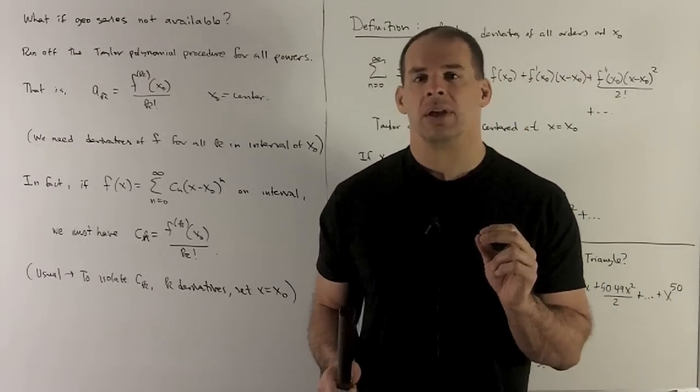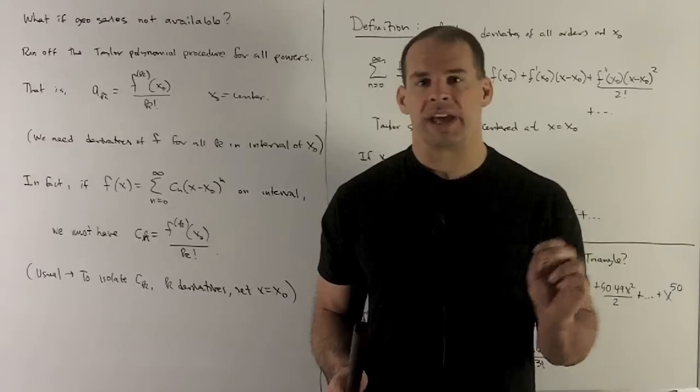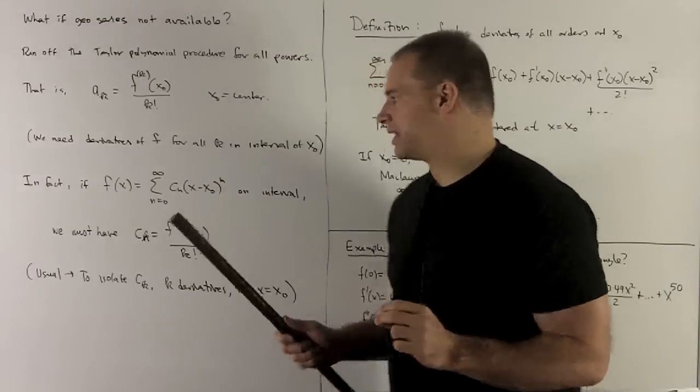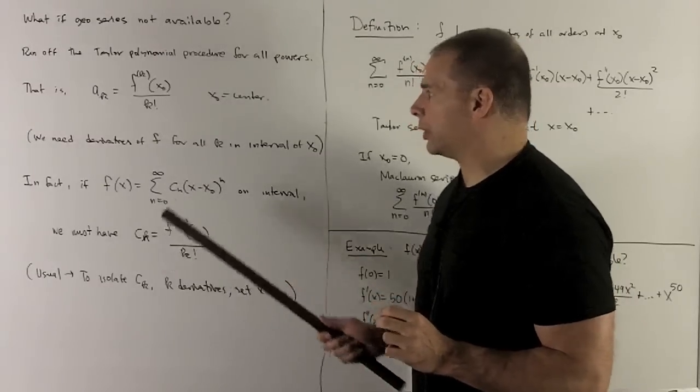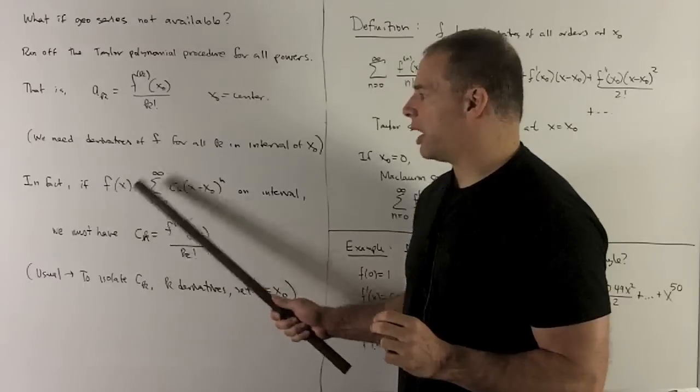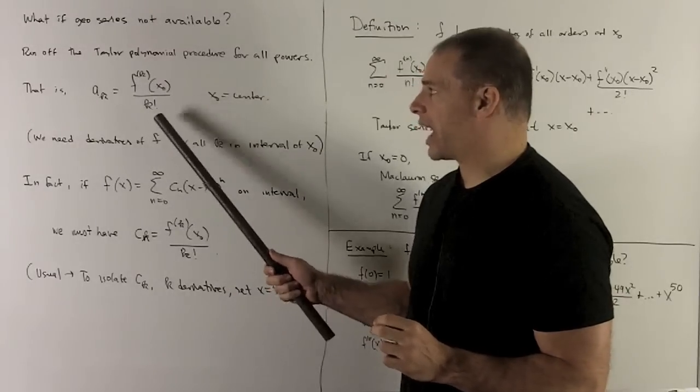What's going to happen here is you can't get away from your Taylor coefficient formula. These cn's are actually going to be equal to what you would have gotten had you started with the function and just cranked your series out using these.